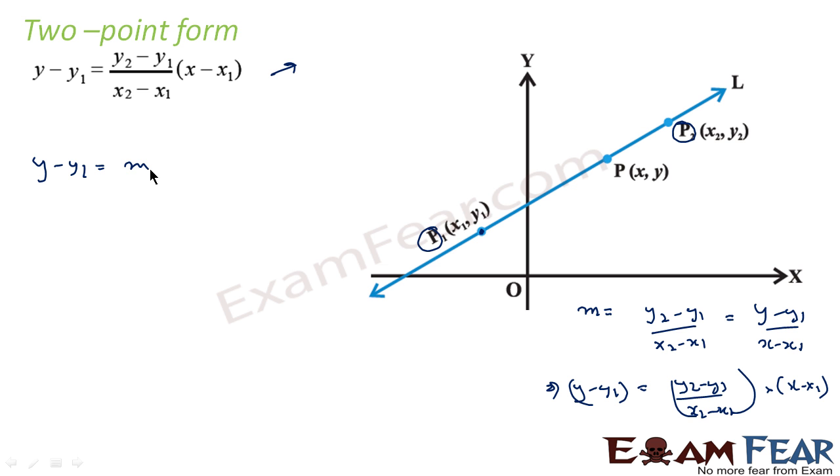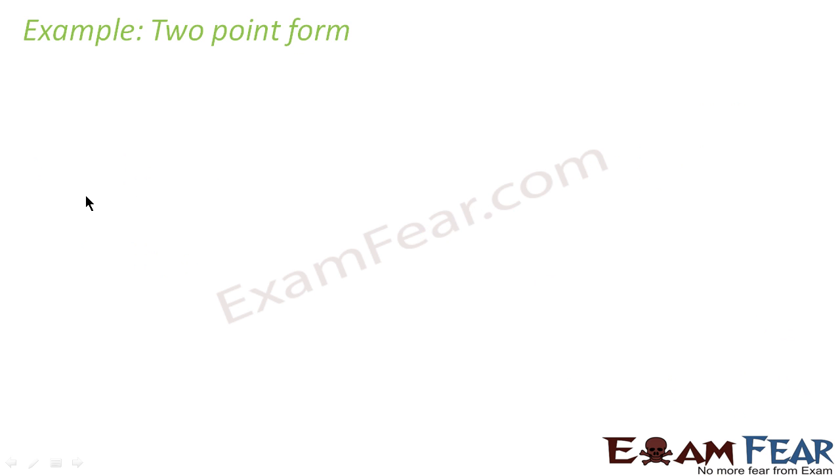And m we can find. We know m, slope of a line is nothing but y2 minus y1 divided by x2 minus x1. This is just a representation. Now the example: we have been told that the line passes through (1, -1) and (3, 5). We have to find the equation of the line.